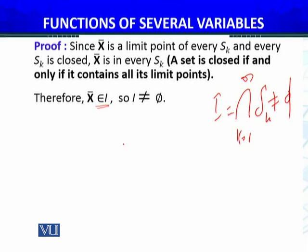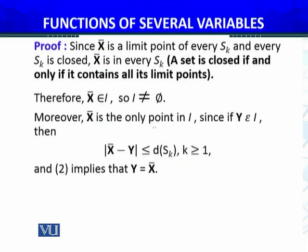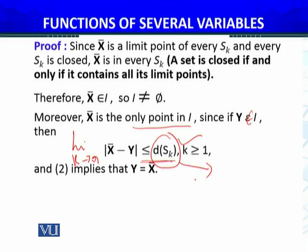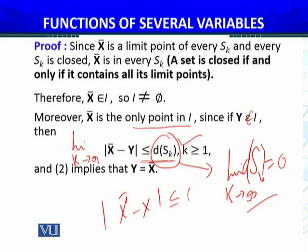अब मैं यह show करूंगा कि X-bar is the only member of Rn that belongs to I। Moreover, X-bar is the only point in I। Since: if Y belongs to I, then |X-bar − Y| ≤ diameter of SK। Now if I take limit as K approaches to infinity, diameter of SK → 0। So |X-bar − Y| ≤ 0 — and since magnitude cannot be less than 0, it must equal 0। Magnitude equals 0 whenever दोनों equal हों — therefore X-bar = Y। So X-bar is the only point in I।